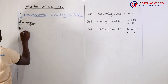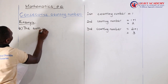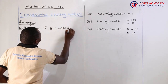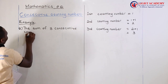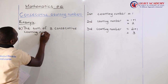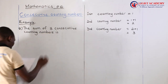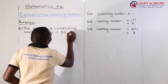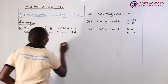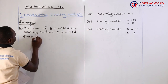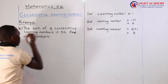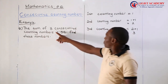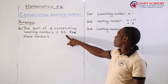The first question I've written is: the sum of three consecutive counting numbers is 36. Find these numbers.